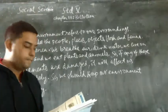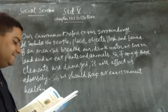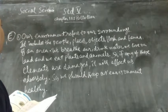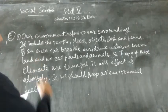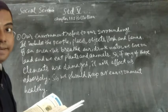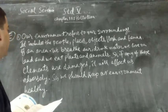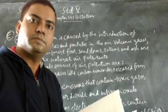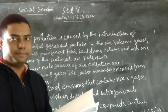Now we will see question number E: answer the following in detail. Question 1: What is environment and why is it important to protect it? Our environment refers to our surroundings; it includes the people, places, objects, flora, and fauna of an area. We breathe air, drink water, we live on land, and we eat plants and animals. So if any of these elements are damaged, it will affect us adversely, so we should keep our environment healthy.